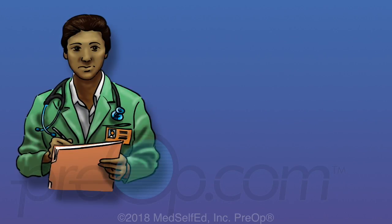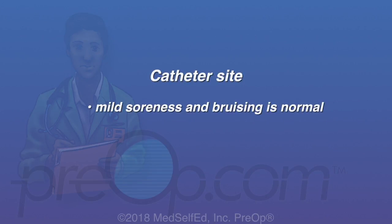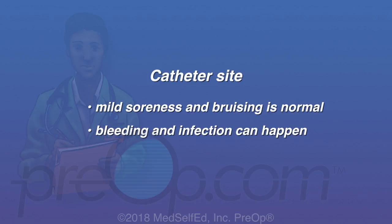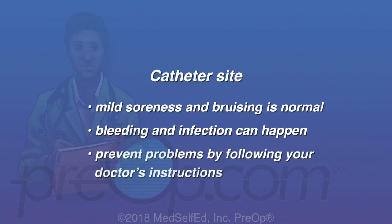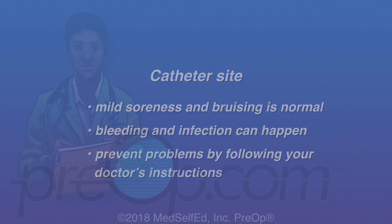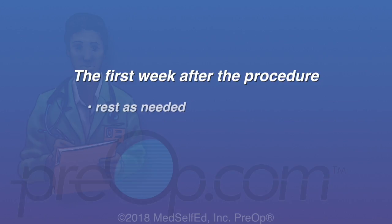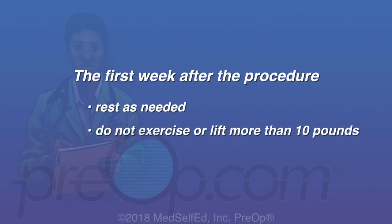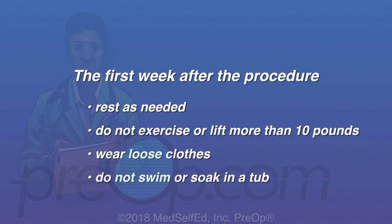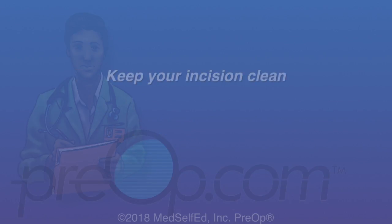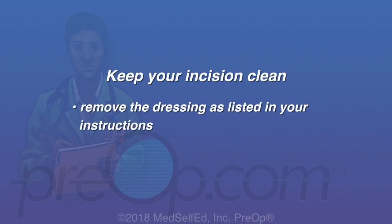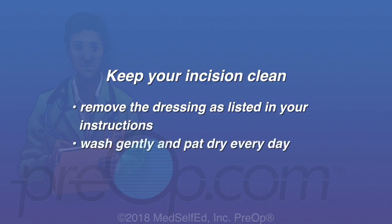The next steps for your care will depend on what was found during the procedure and your general health. At the catheter site, mild soreness and bruising is normal. Rarely, bleeding or infection can happen. Help prevent problems by following your doctor's instructions carefully. The first week after the procedure, rest as needed. Do not exercise or lift anything more than 10 pounds. Wear loose clothes and do not swim or soak in a tub. Keep your incision clean — remove the dressing as listed in your instructions, wash gently and pat dry every day, and do not rub the incision.